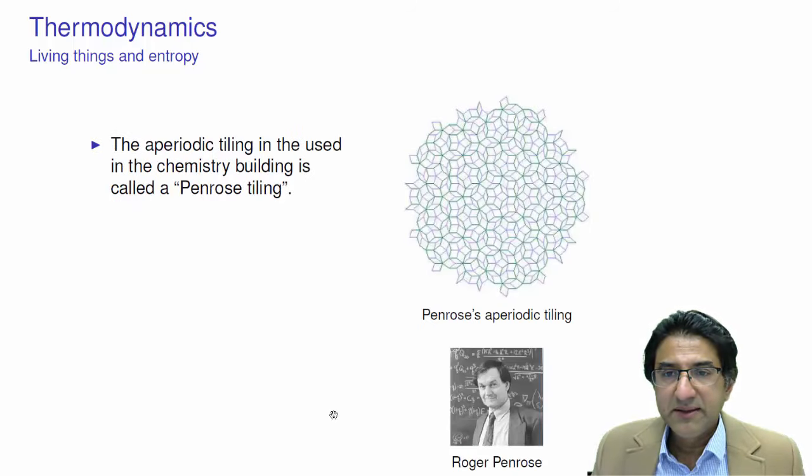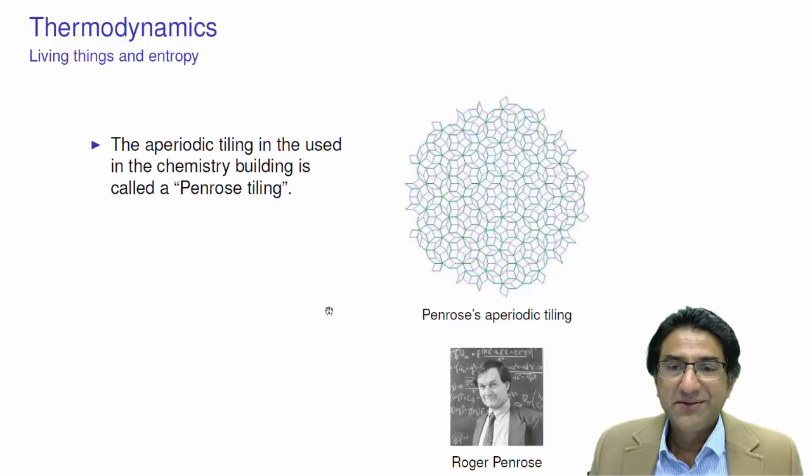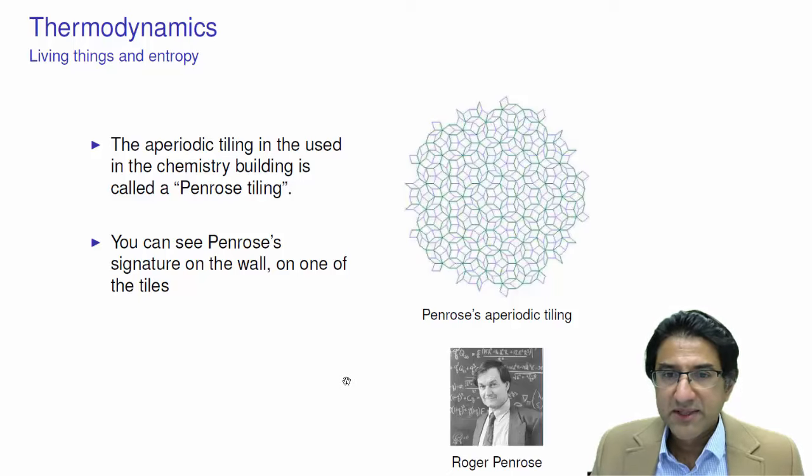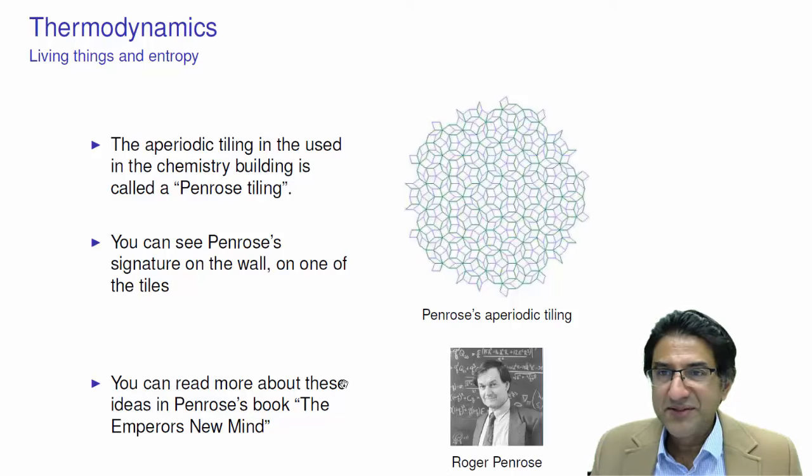Incidentally, if you've been in the chemistry building, you will see a certain tiling on the floor. This is called a Penrose tiling. It's an aperiodic tiling. It's very interesting. It doesn't completely repeat itself. However, for example, one part of it is not exactly the same as the other, but there are no gaps in it. This tiling is made only from two types of tiles, and it's called a Penrose aperiodic tiling. Here's Roger Penrose over here. I think he's a bit younger than Stephen Hawking. But you can see Penrose's signature on the wall. He was invited here, and I was there to see him sign his signature there.